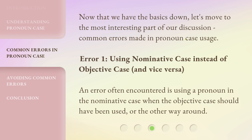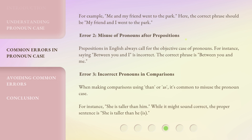Now that we have the basics down, let's move to the most interesting part of our discussion: common errors made in pronoun case usage. Error 1: Using nominative case instead of objective case, and vice versa. An error often encountered is using a pronoun in the nominative case when the objective case should have been used, or the other way around. For example, 'Me and my friend went to the park.' The correct phrase should be, 'My friend and I went to the park.'